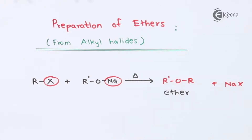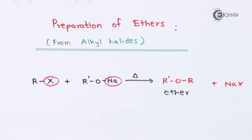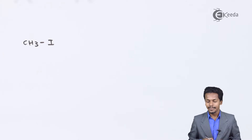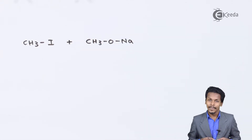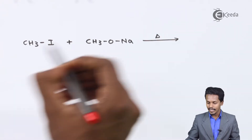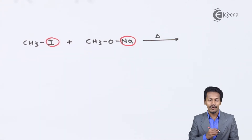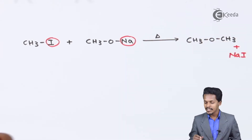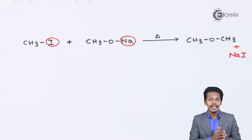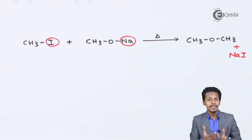With this method we can prepare a simple ether as well as a mixed ether, because the two alkyl groups can be the same or different. For example, if methyl iodide is treated with CH3ONa (sodium methoxide), the byproduct is NaI and the main product is CH3OCH3, which is methoxymethane — a simple ether. The conversion of an alkyl halide in the presence of sodium alkoxide to obtain an ether is known as Williamson synthesis.